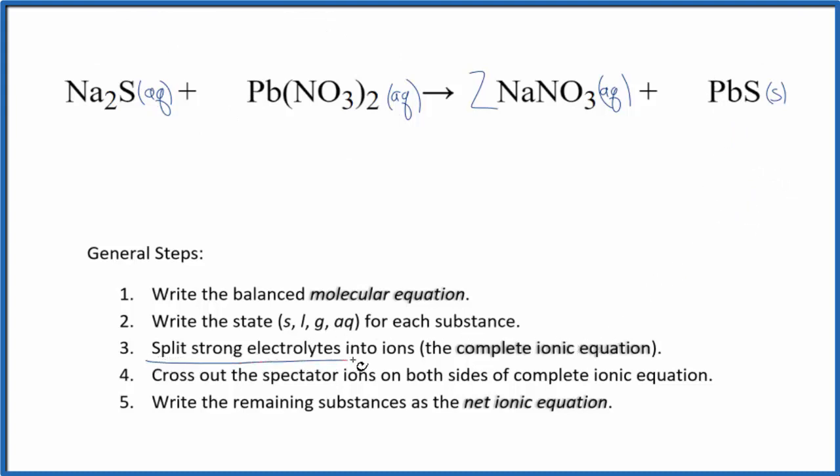Now we can split the strong electrolytes into ions. That's the complete ionic equation. Sodium on the periodic table, group 1. So 1 plus, then the sulfur, that's 2 minus ions. So we have 2 sodium ions. And I won't write the states now. Let's do that at the end. Plus the sulfide ion, S2 minus.